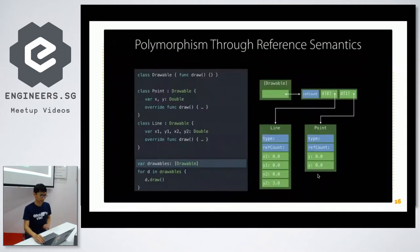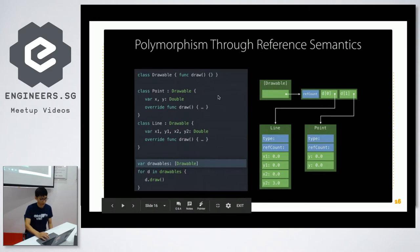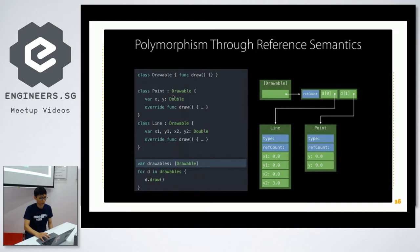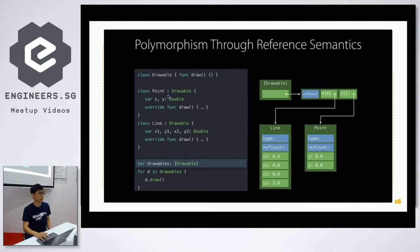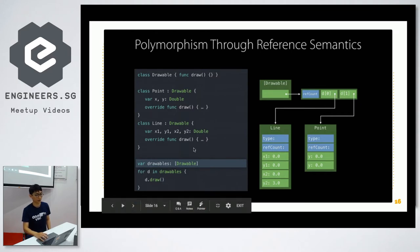For an example of dynamic dispatch: we have a Drawable superclass and Point and Line subclasses, and a Drawable array. Because the array can contain either Point or Line, it has to look at the vtable on the right side here to determine whether the actual element is a Line or a Point. When you call draw for that object, by looking at the table it can jump to the correct implementation.